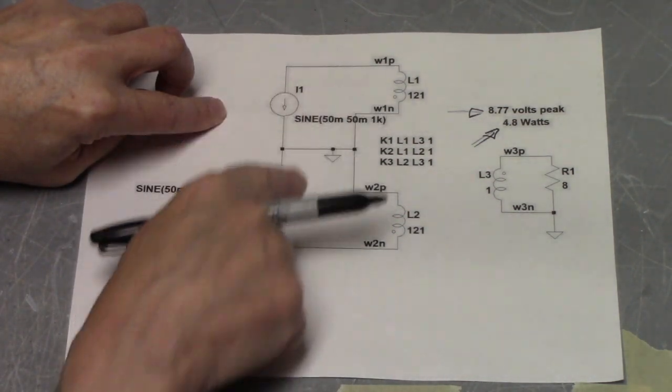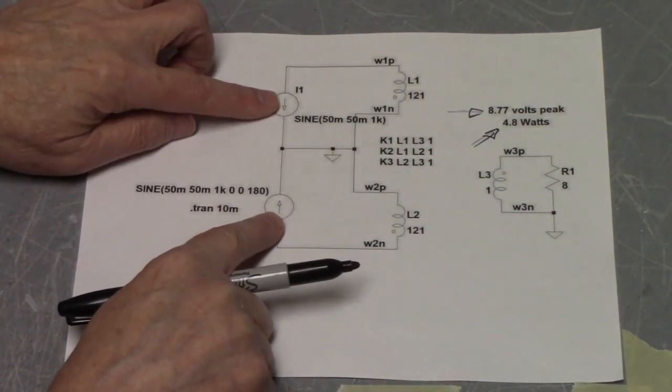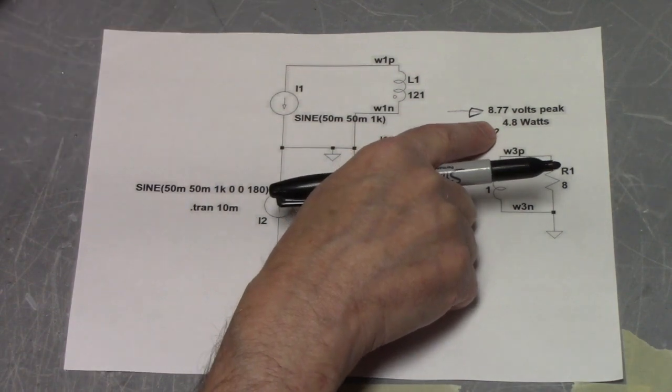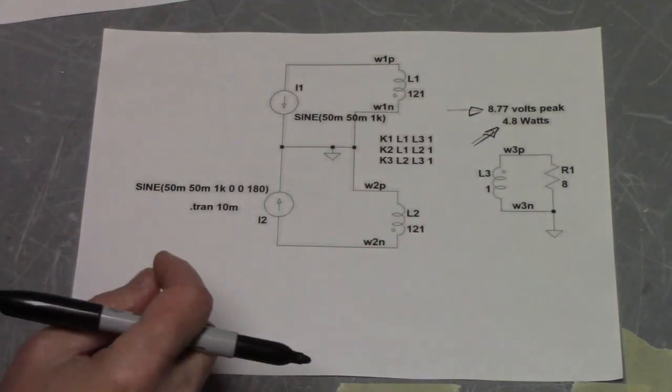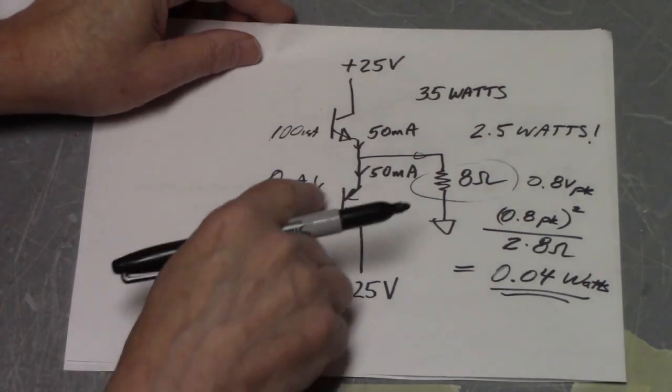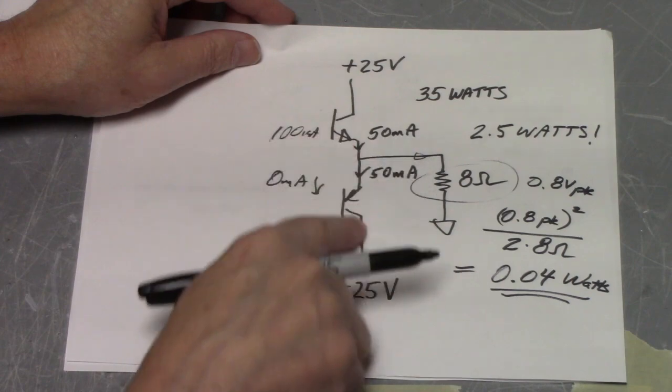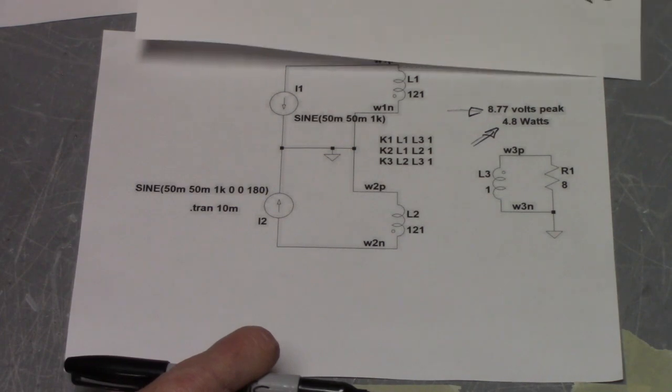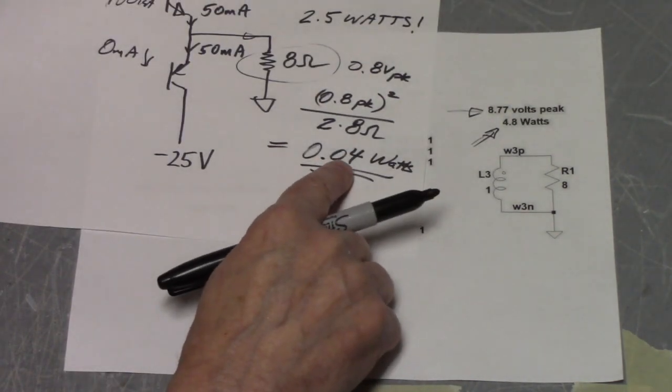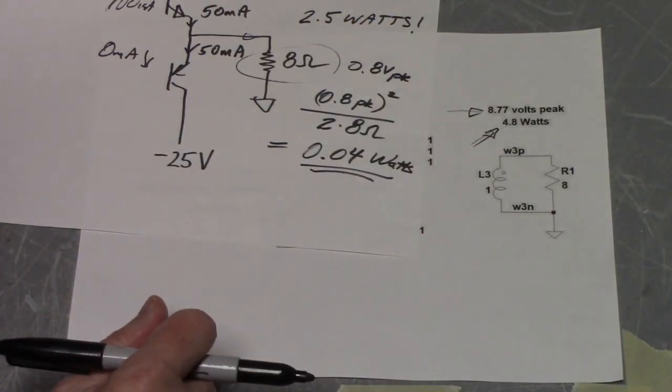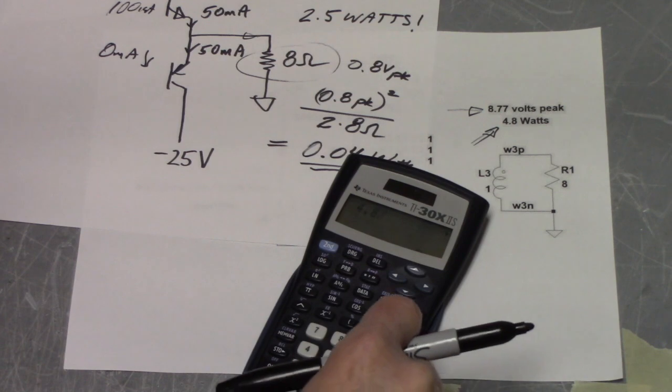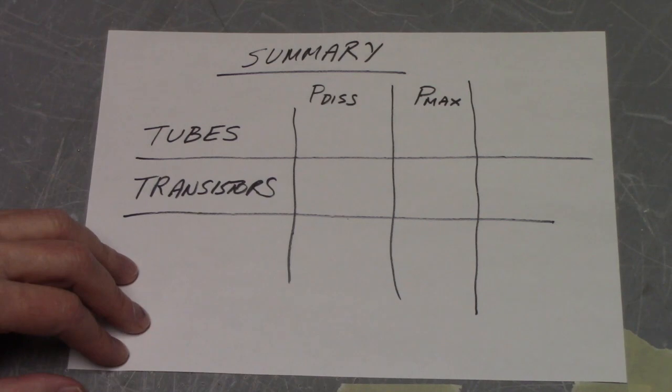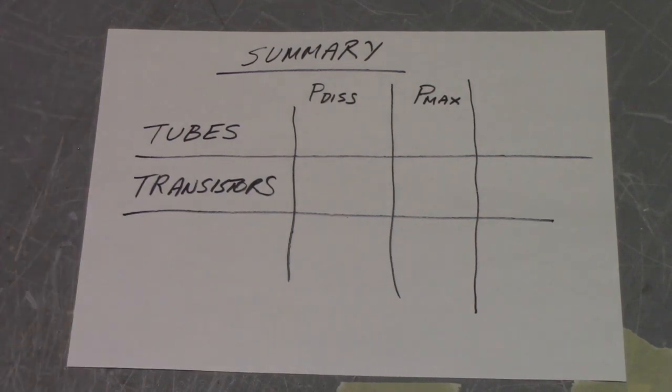So let's compare for a second. With this modest shift of the operating current of the output tubes, we've gotten all the way to 4.8 watts of output power. With the same kind of a shift in the transistor amplifier's output device current, we only get to 0.04 watts. So that's a ratio easily of 0.04 to 4, we'll call it, 120 to 1. 4.8 divided by 0.04. 120 to 1. All these numbers might get a bit confusing at this point, but let's see if we can summarize where we are.